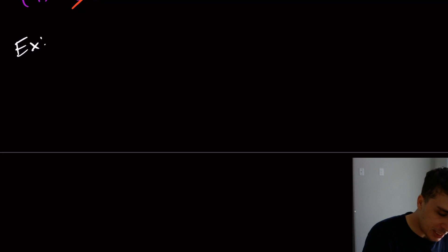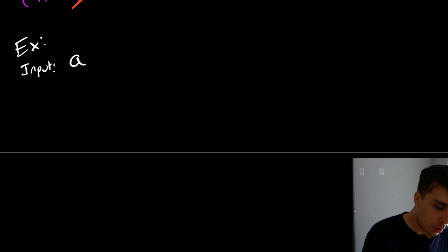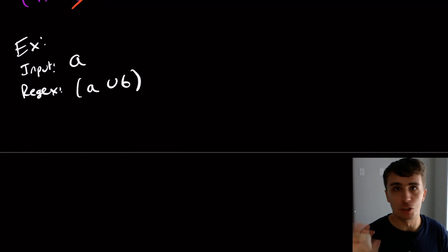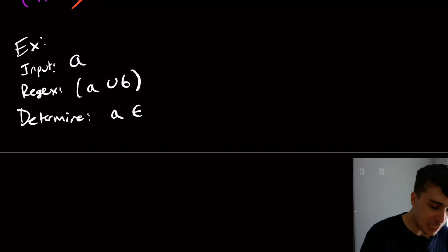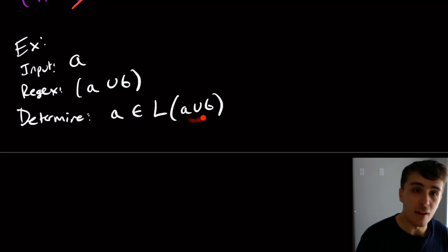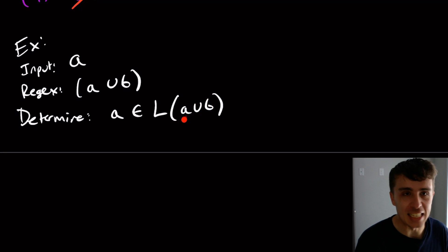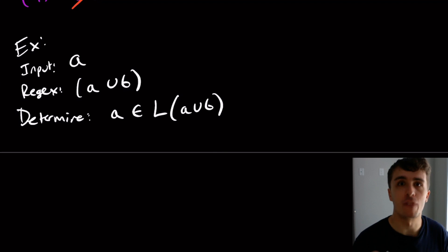Let's do a very simple example. So our input string is `a`, and our regex is `a union b` — no stars, no concatenations, nothing. What we want to determine is whether `a` is in the language of `a union b`. We can see that it obviously is because `a` is right here, so the answer is yes, but we want to actually verify that.